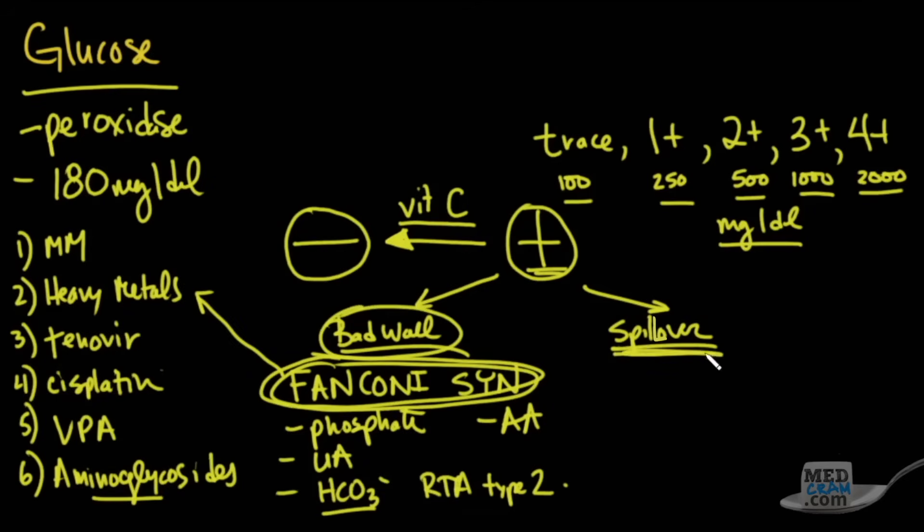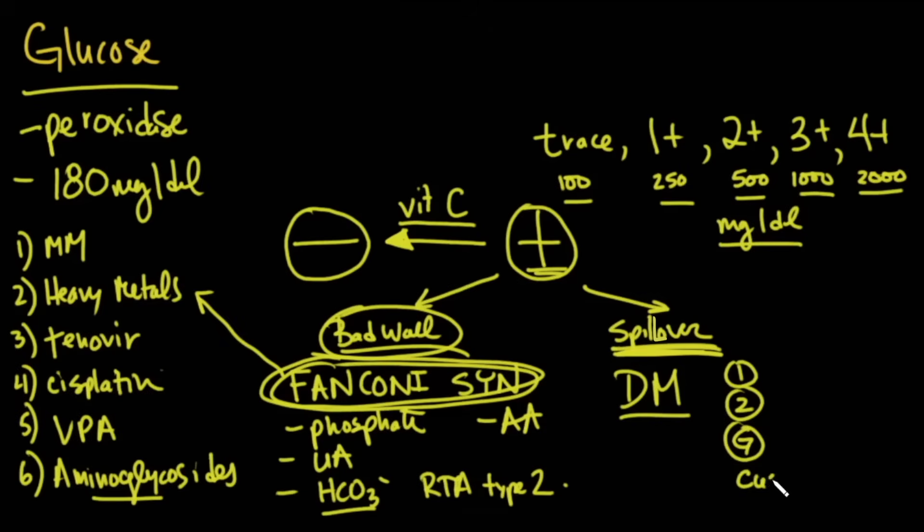In terms of spillover though, where the wall is fine but you just have too much glucose in the blood, the biggest one there you got to know about is diabetes. You can have type 1, you can have type 2, you could have even gestational diabetes that could do it. And anything basically that will increase your blood glucose, for instance Cushing's disease, that could do it. And that list goes pretty deep. So those are the causes of glucose in the urine.